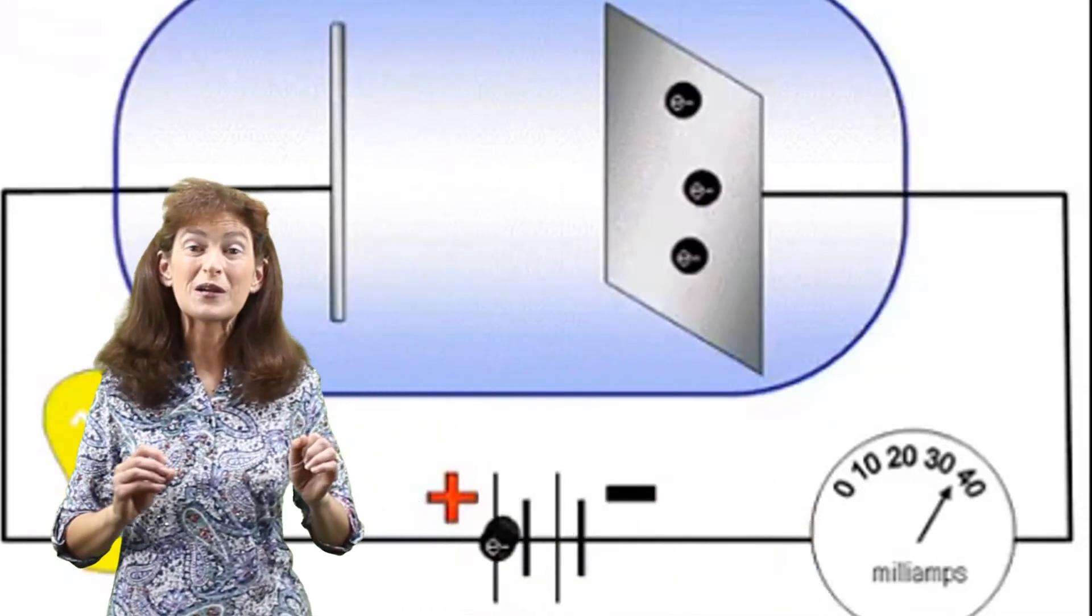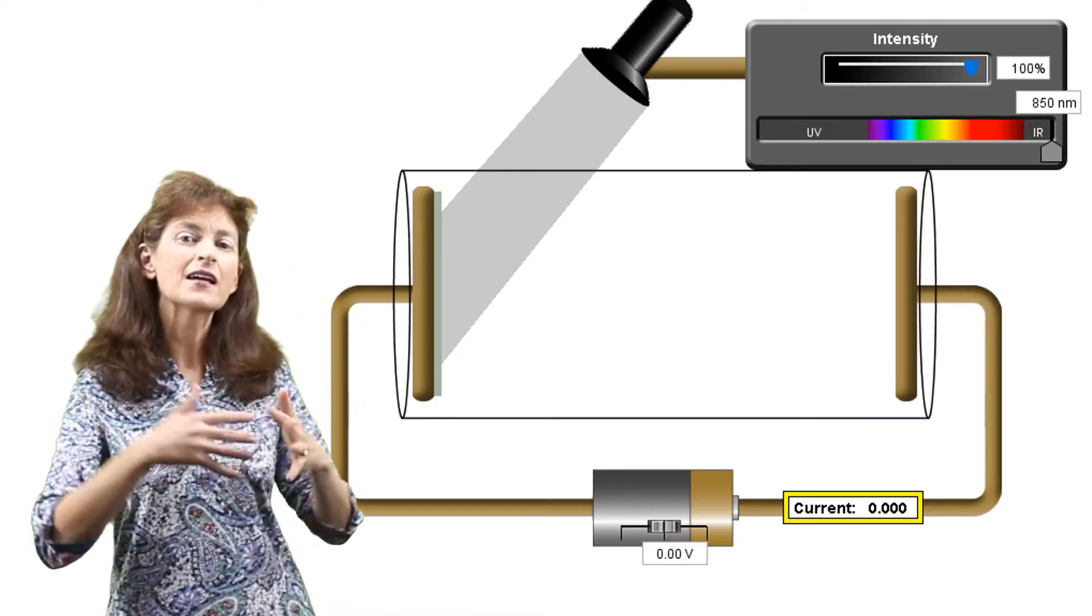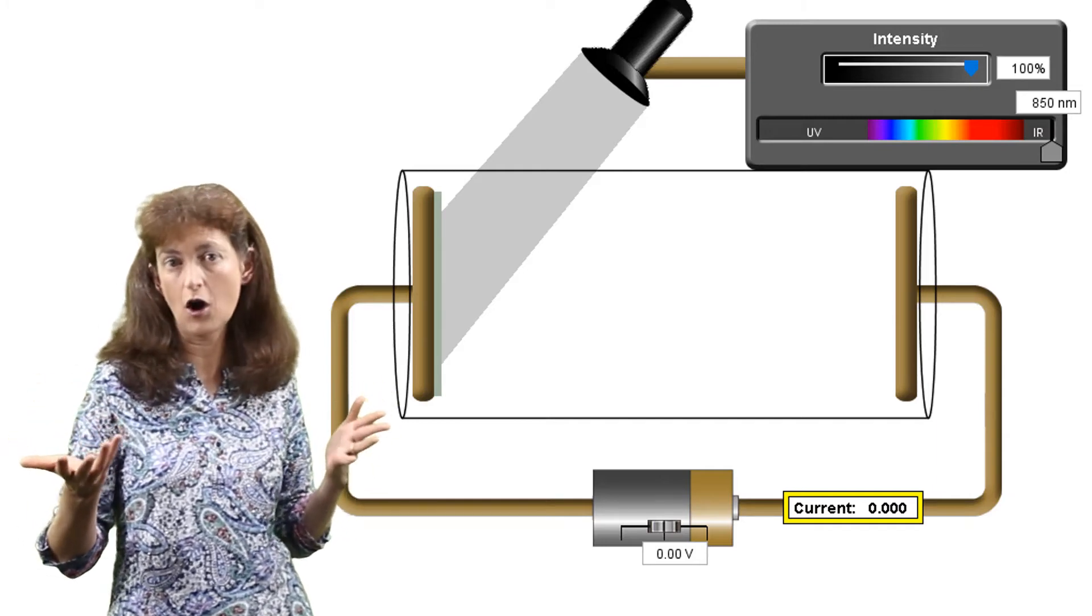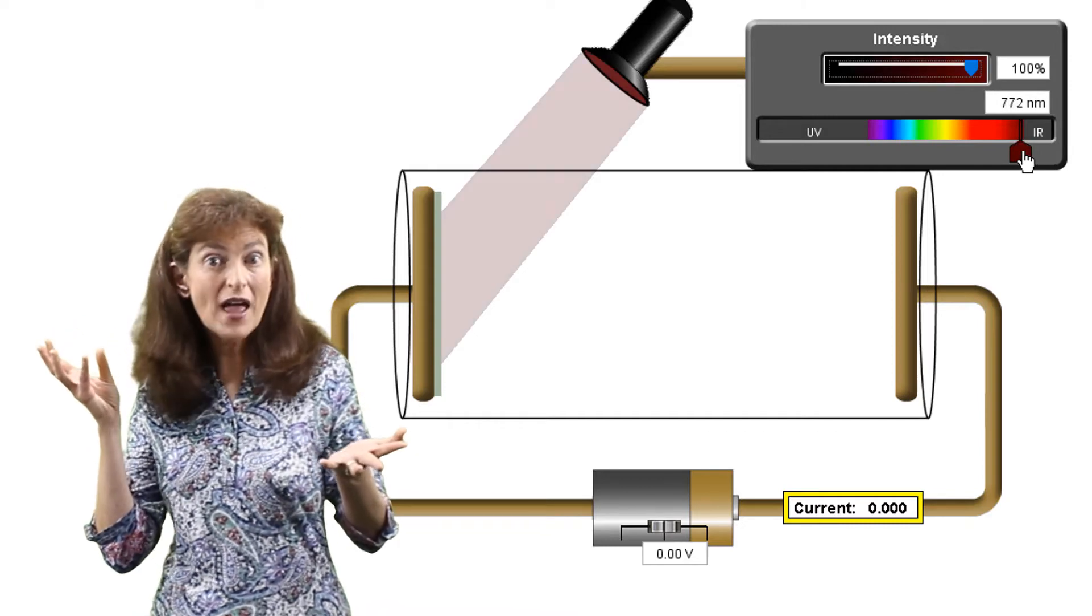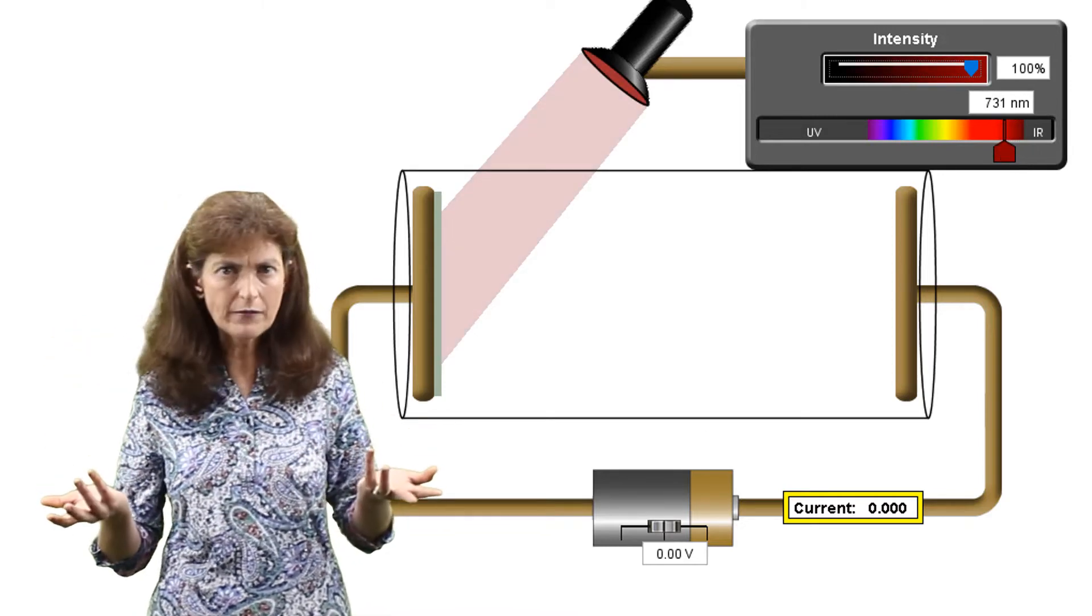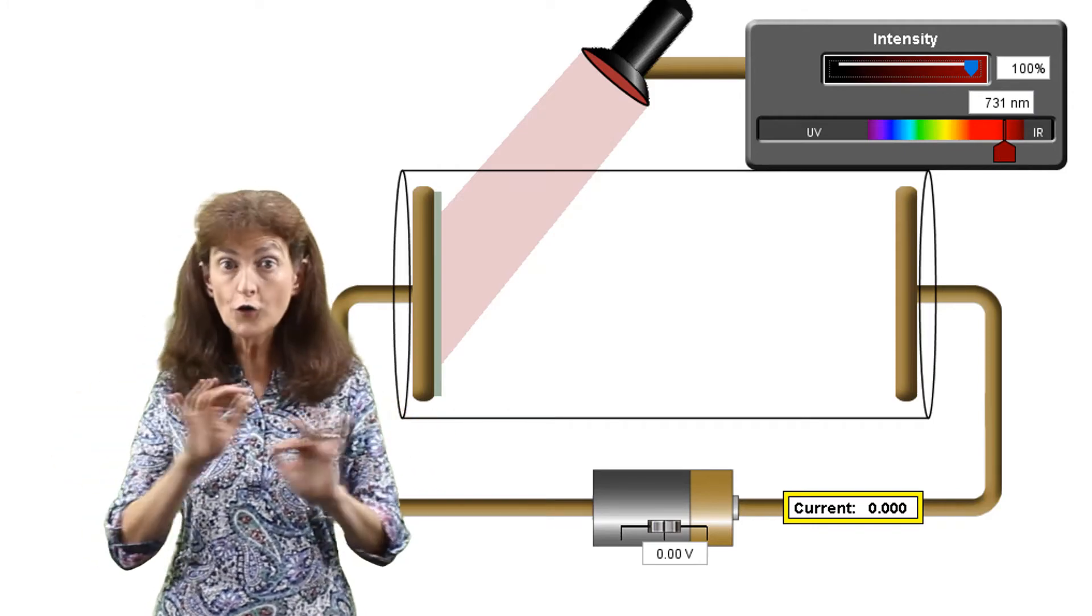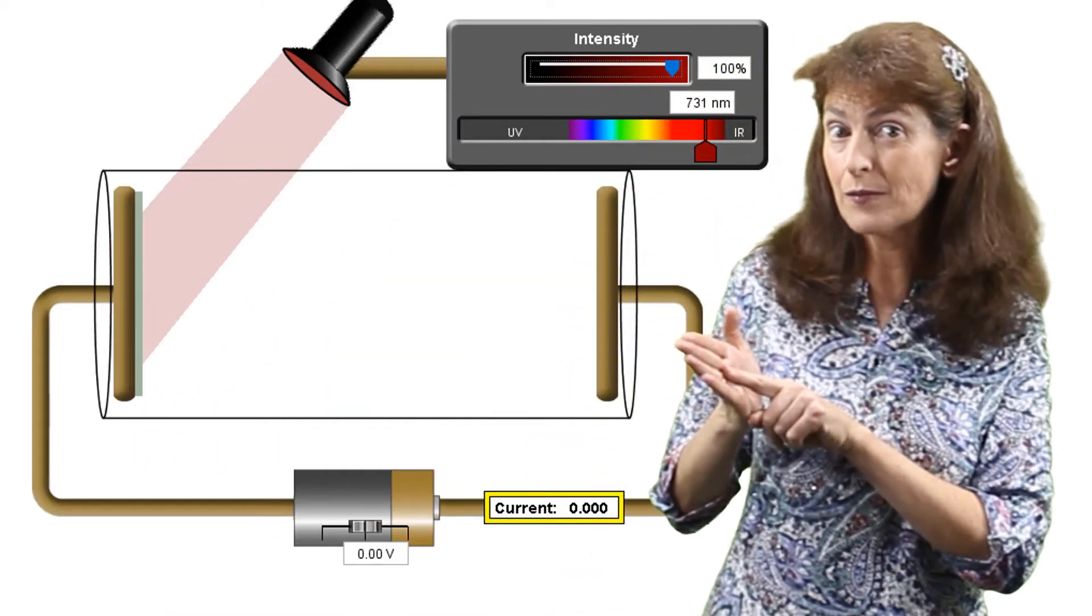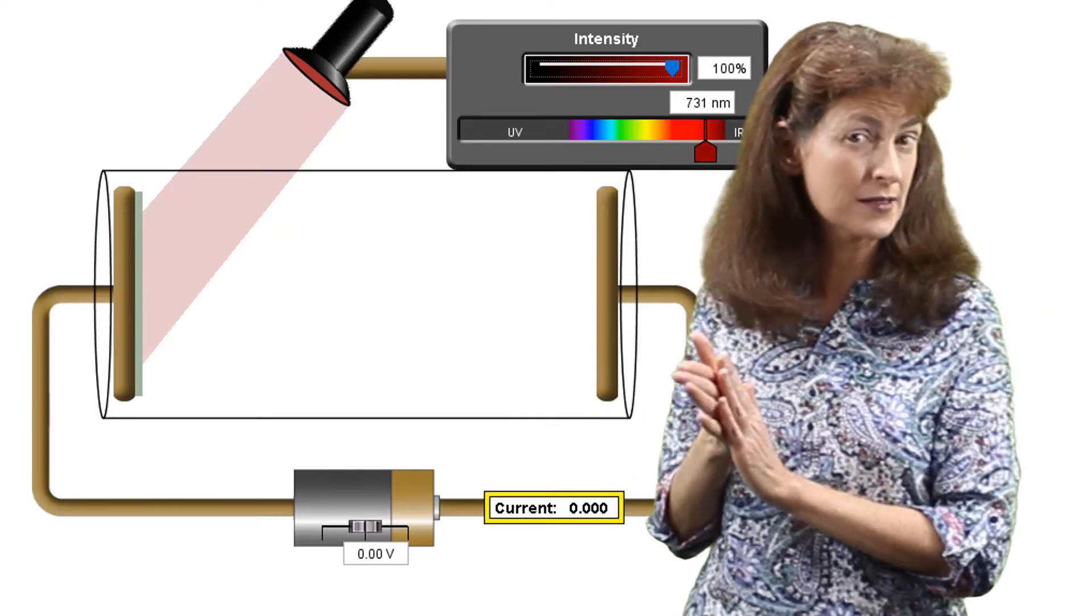So what we do is we shine light onto that electrode, that metal plate, and we change the properties of that light that we're shining onto it. So we would start off by shining let's say red light onto our metal surface and we would see no current reading, no voltmeter reading. That means no photoelectric effect occurring. Those photons striking that metal don't have enough energy to overcome the work function of that particular metal.